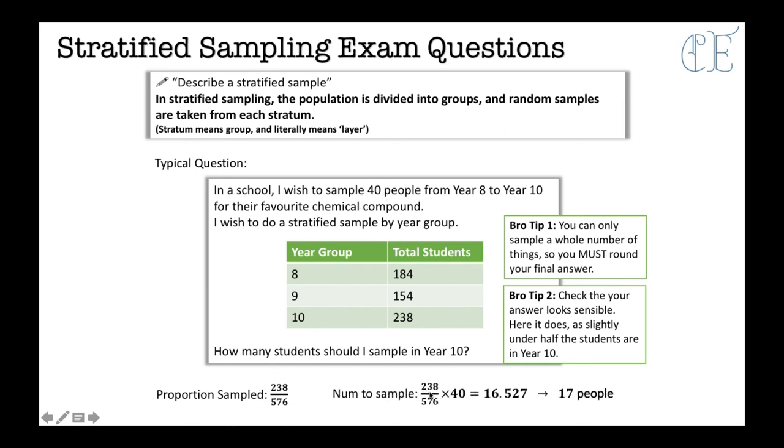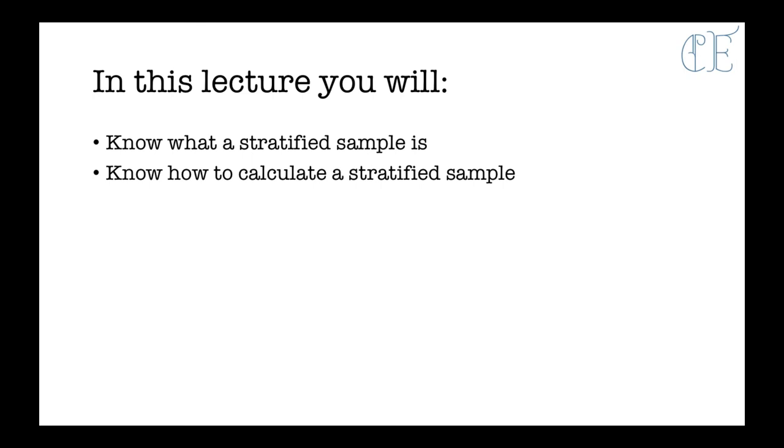So you're going to do 238 divided by 576. The reason it's 576, by the way, is because that's the total. Don't forget you need the total of the students. And then we divide those, press equals, and then times by 40, giving us 16.527, which can be rounded to 17 people. So I hope you've understood all of that.